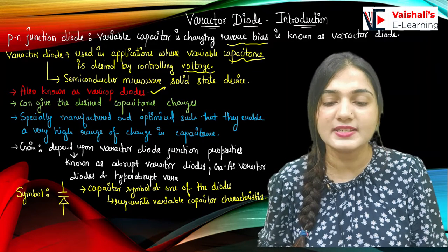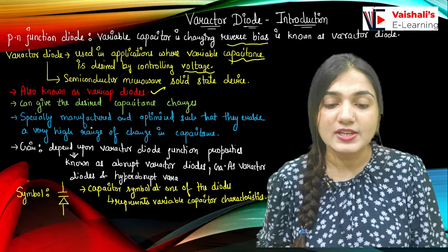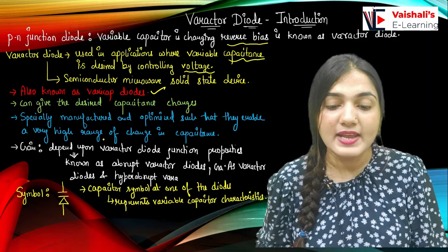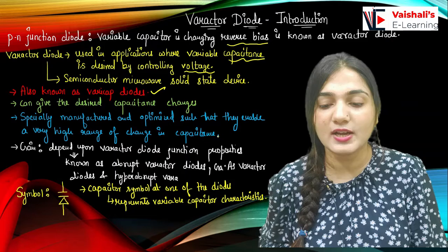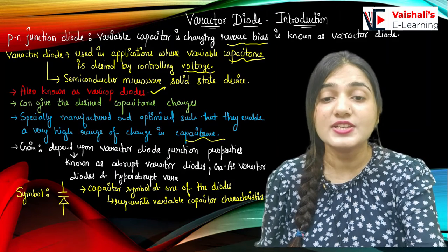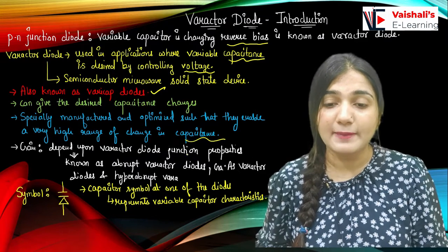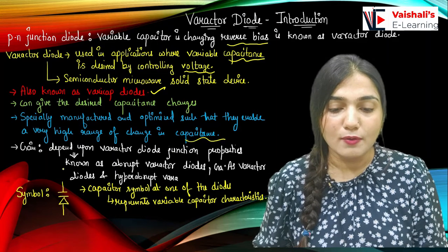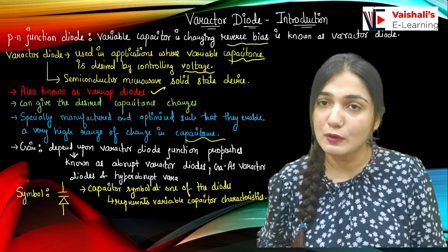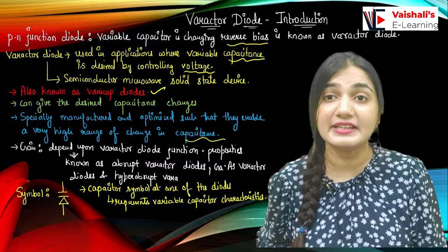It gives the desired capacitance changes by changing the voltage of the diode. It is specially manufactured and optimized such that it enables a very high range of change in the capacitance. So I can have a very large range of capacitance by changing the reverse bias voltage of the Varactor diode. Its gain is dependent upon the Varactor diode junction properties, and we know junction properties for a diode are really important to understand the gain.